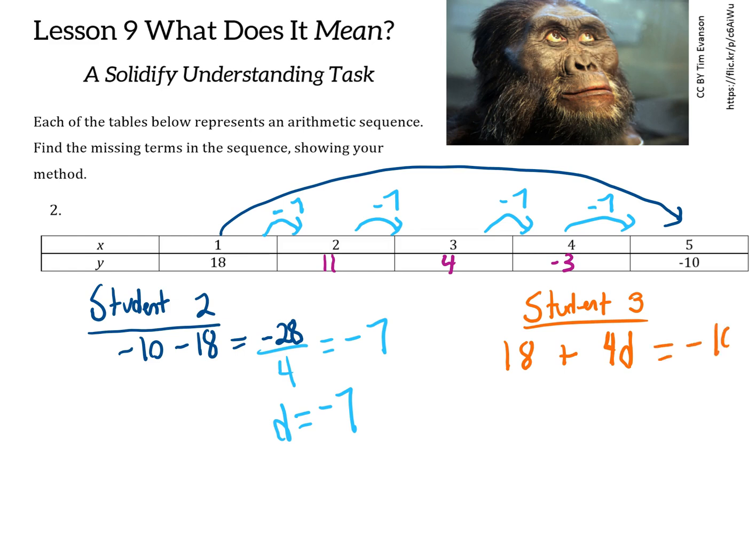We can write an equation like this and solve it. Subtract 18 on both sides to get 4d equals negative 28, divide by 4 on both sides, and we get d equals negative 7. Both students have valid strategies that work and would get us to fill in the table the same way. The nice thing about these two strategies is that they'll continue to work no matter whether the number of spaces is odd or even.